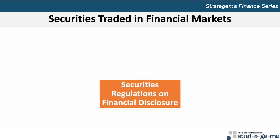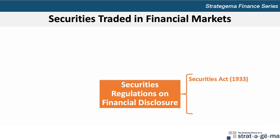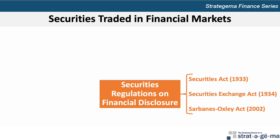Many regulations exist that attempt to ensure that businesses disclose accurate financial information so that investors participating in financial markets can more properly value stocks and debt securities issued by firms. The most noteworthy regulations include the Securities Act of 1933, the Securities Exchange Act of 1934, and the Sarbanes-Oxley Act of 2002.